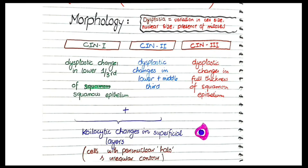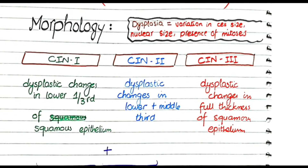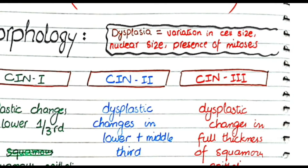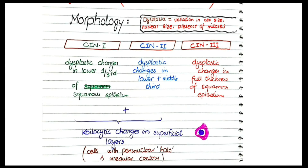Now let's discuss the morphological or histopathological features. The most important point to remember is that the morphological hallmark of cervical precancerous lesions is dysplasia. The difference between normal squamous cells of the transformation zone and these precancerous lesions lies in only one word: dysplasia. Dysplasia means lack of uniformity — variation in cell size, nucleus size, or the presence of mitotic figures.